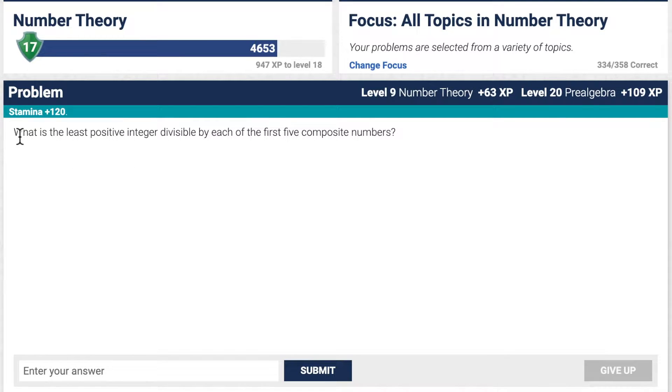So the first question here: what is the least positive integer divisible by each of the first five composite numbers? For each of these questions I will explain my thinking. First when you see a problem you need to be able to understand the problem, especially one with complex wording like this one.